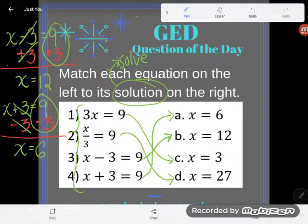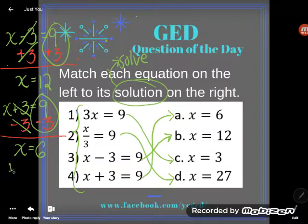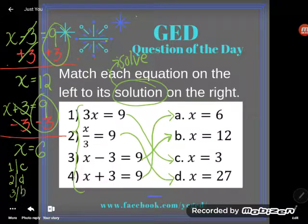Great, so let's reiterate. One matched with c, two matched with d, three matched with b, and four matched with a.